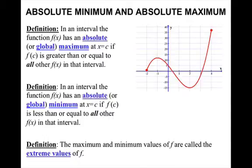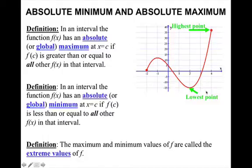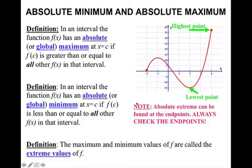If we were to look at this graphically, the absolute maximum is the highest point, and the lowest point is your absolute minimum. Note: absolute extrema can be found at the endpoints, so you always have to check the endpoints.